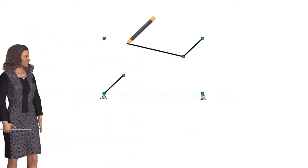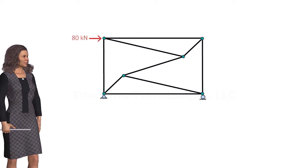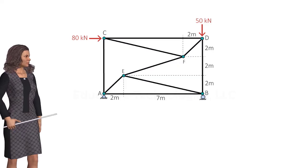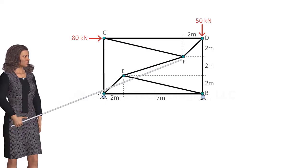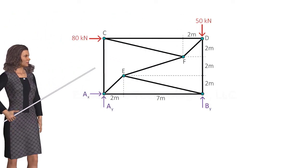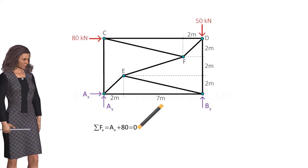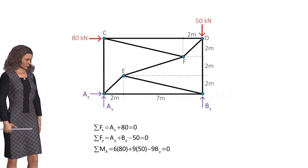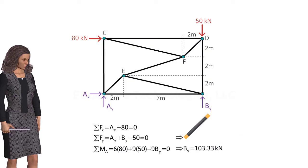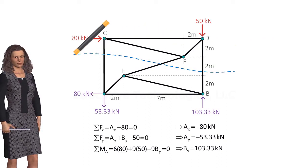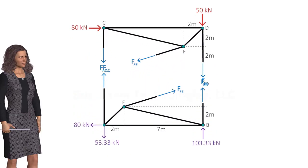Let's apply this procedure to solve another problem. Consider this statically determinate truss. Suppose we wish to calculate the force in member EF. We start by calculating the support reactions for the entire truss. Here is the free body diagram of the system, for which we can write three equilibrium equations. Solving these equations gives us the values for By, Ay, and Ax. Let's cut the truss horizontally like this. The cut divides the truss into two separate parts, exposing three member forces, one of which is our target force.